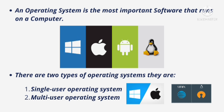A multi user operating system is designed for use on more than one computer. This software is designed in such a way that it can be used on more than one computer by several users simultaneously. Examples of multi user operating systems are Unix and Linux.